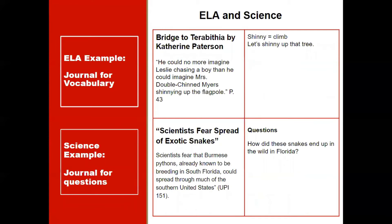This slide shows an example of two double entry journals. Double entry journals are used for new or unfamiliar vocabulary words while reading in any content area. For example, we see an ELA example of a journal. On the left side, we see a passage and the page number from which the passage was taken. On the right side, we see a new vocabulary word contained within the passage, and the student's use of the word in a sentence they developed on their own. A reminder that the sentence use needs to relate to the passage context.